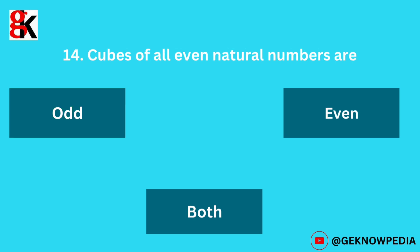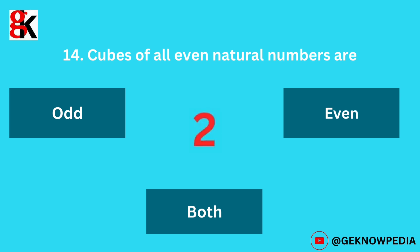Fourteenth question. Cubes of all even natural numbers are: odd, even, or both. The correct answer is even.